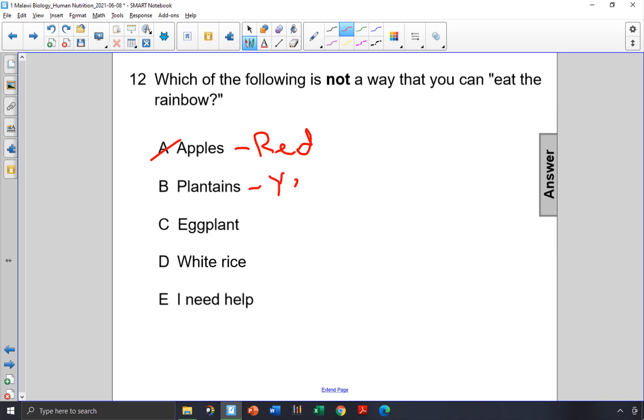Plantains are yellow and green. They contain plenty of fiber and nutrients as well. We'll cross them off the list.